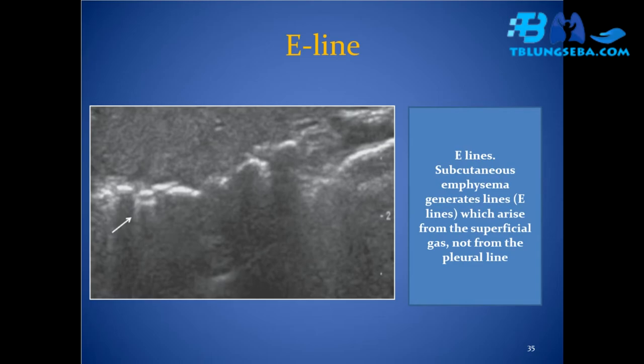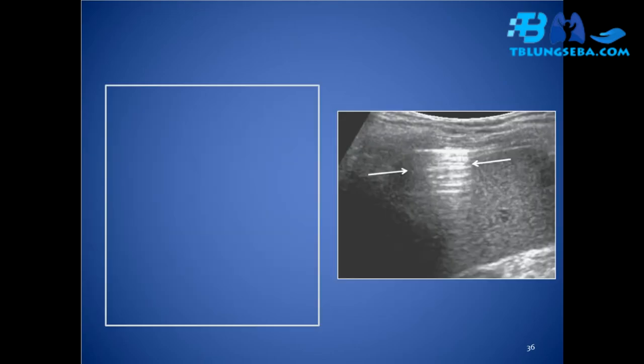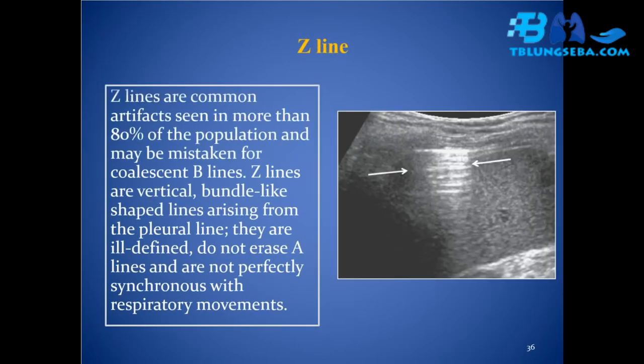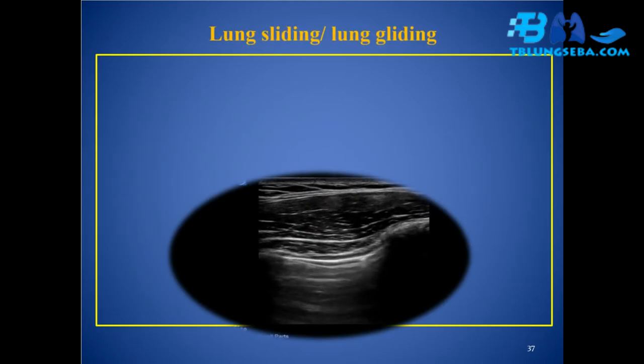E-lines arise from superficial gas, not from the pleural line. Z-line: Z-lines are common artifacts seen in more than 80% of the population and may be mistaken for coalescent B-lines. Z-lines are vertical bundle-like shaped lines arising from the pleural line. They are ill-defined, do not erase A-lines, and are not perfectly synchronous with respiratory movements.